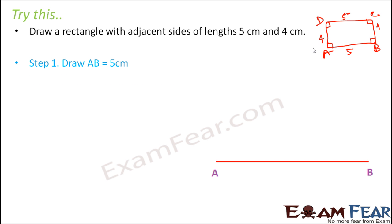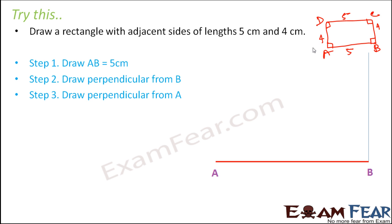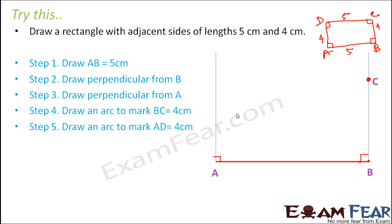So first we draw any one side let's say AB is equal to 5 cm is drawn. Then we draw perpendicular from B again we draw perpendicular from A. Now how we will draw these perpendiculars I think I have already discussed using compass you will have to make an angle of 90 degrees at these points. So once you draw these perpendiculars then you will have to draw an arc to mark BC is equal to 4 cm. So from point B keep the compass center here and then you make an arc at a distance of 4 cm. So wherever you make that mark that is your point C. Similarly you make a mark by making an arc at a distance of 4 cm from point A. So this point would be your point D. So now you join CD so what you get ABCD is nothing but a rectangle.